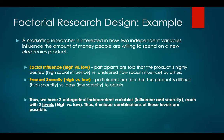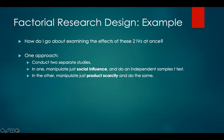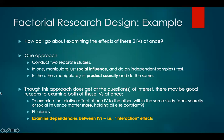There are four unique combinations of these levels. How do we examine the effects of these two independent variables at once? One approach would be to conduct two separate studies — in one, manipulate just social influence and do an independent samples t-test; in the other, manipulate just product scarcity and do the same. Though this approach does get at the questions of interest, there are good reasons to examine both IVs at once: to examine the relative effect of one IV compared to the other within the same study, to ask whether scarcity or social influence matters more holding all else constant, and it's more efficient to run one study. We can also examine dependencies between independent variables, or interaction effects.